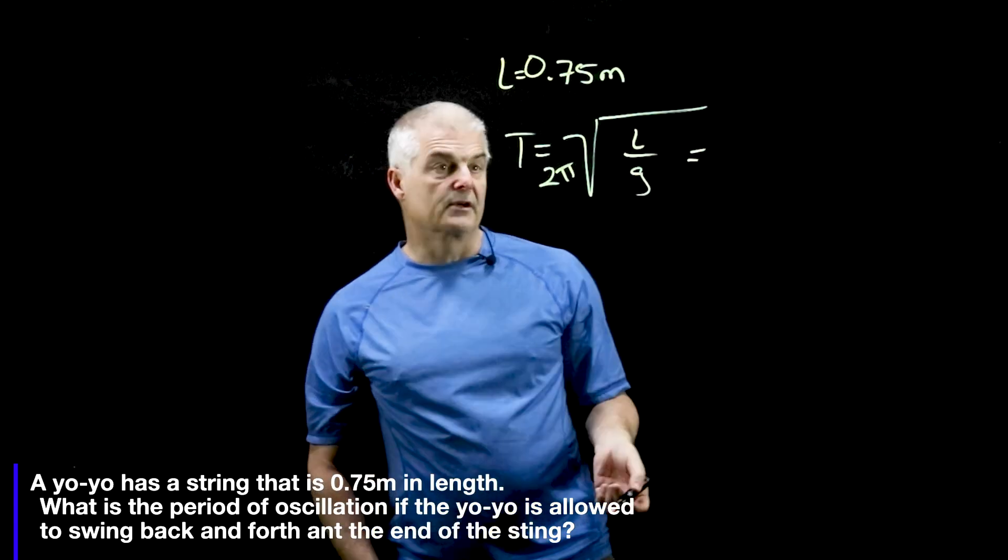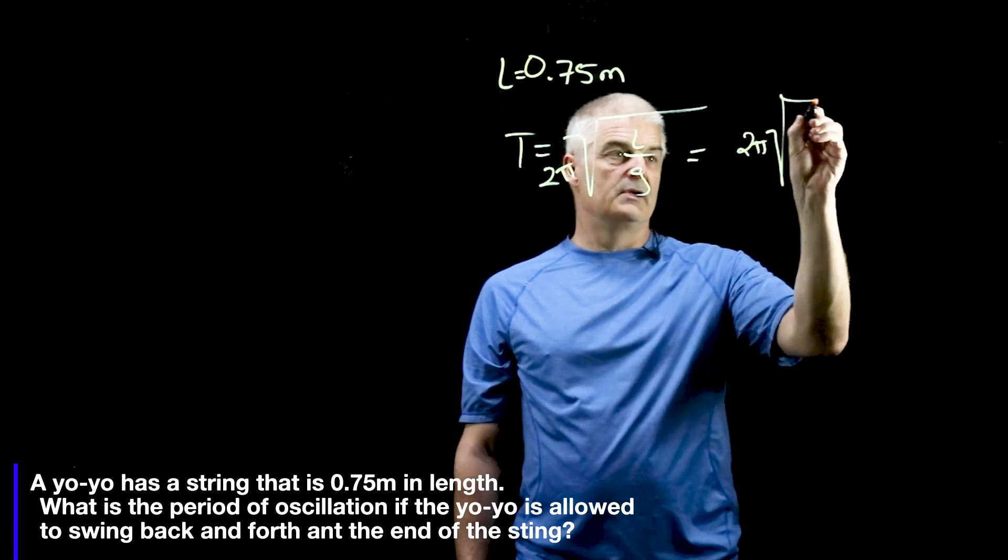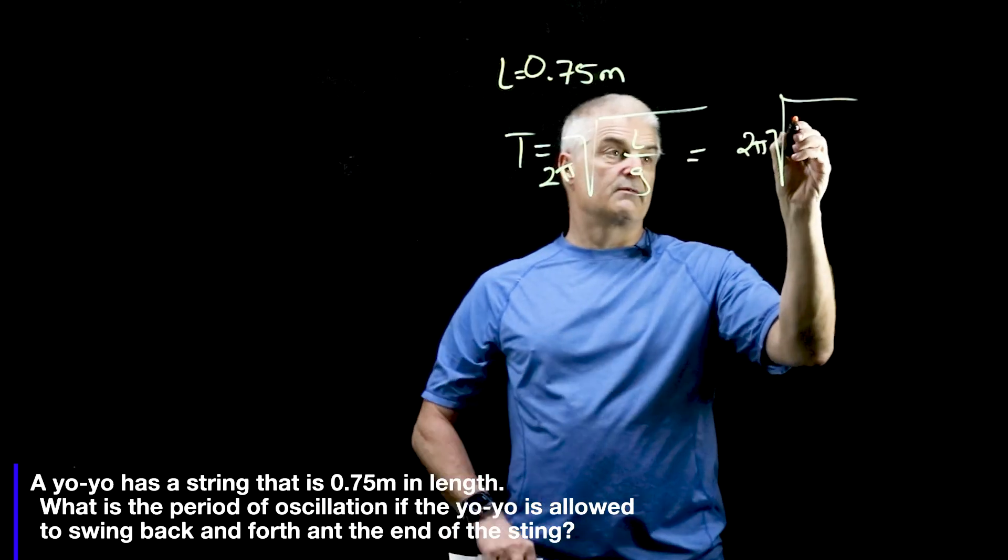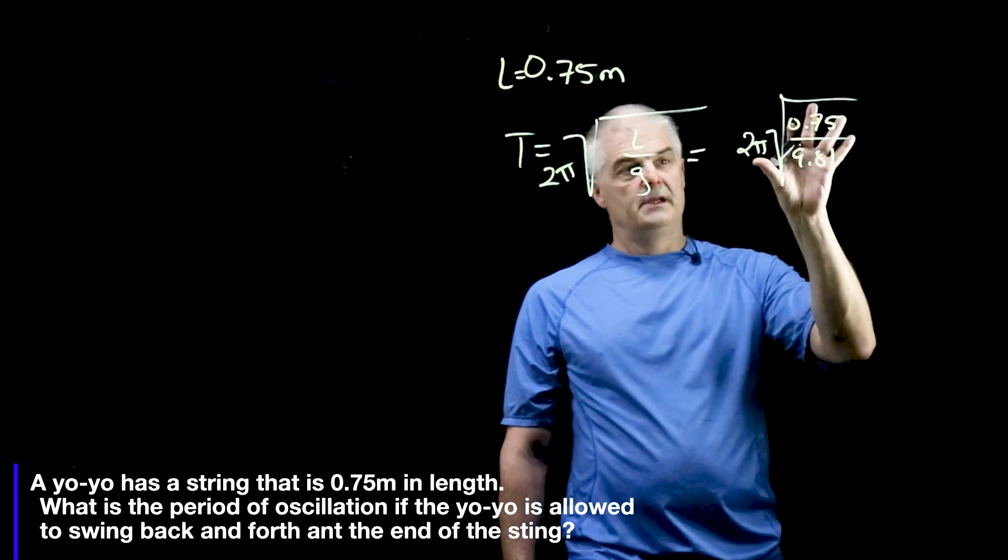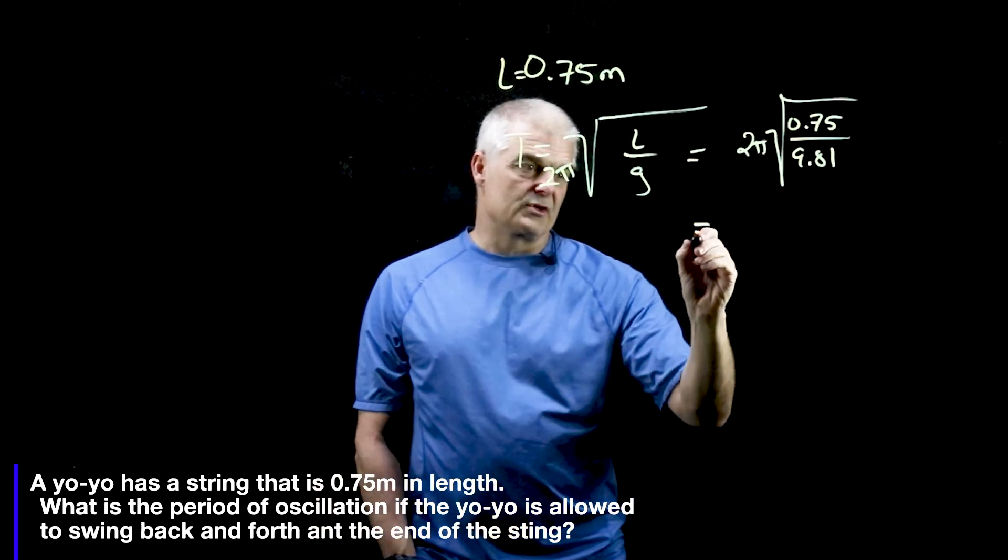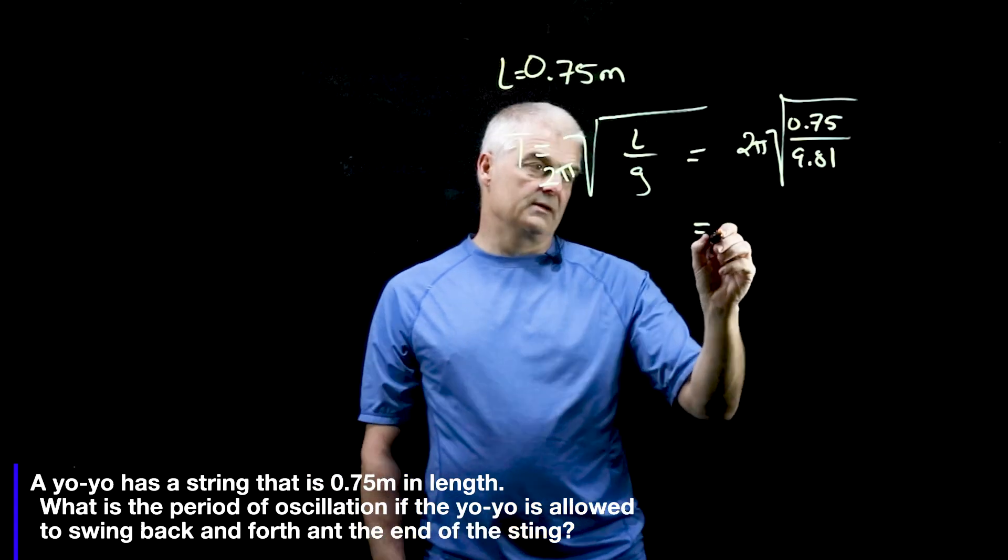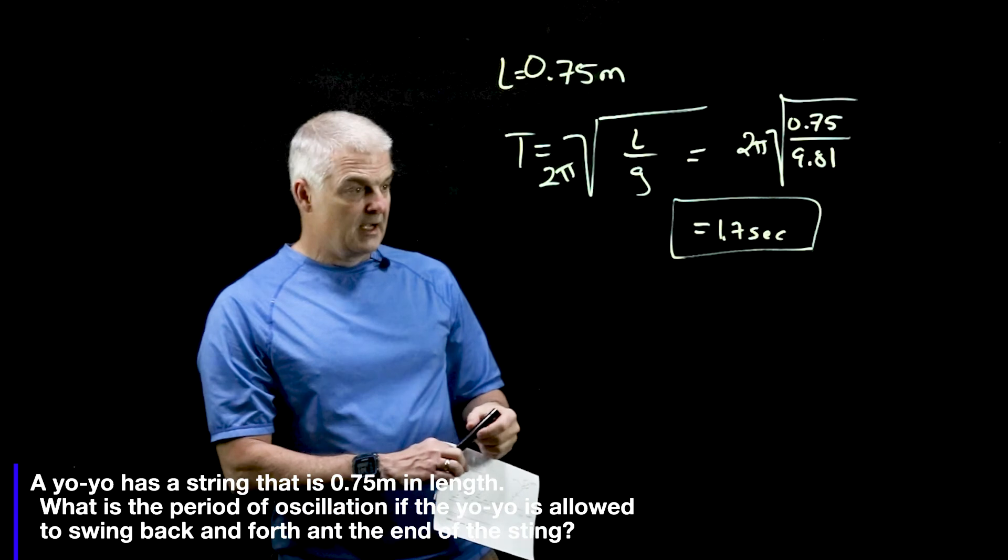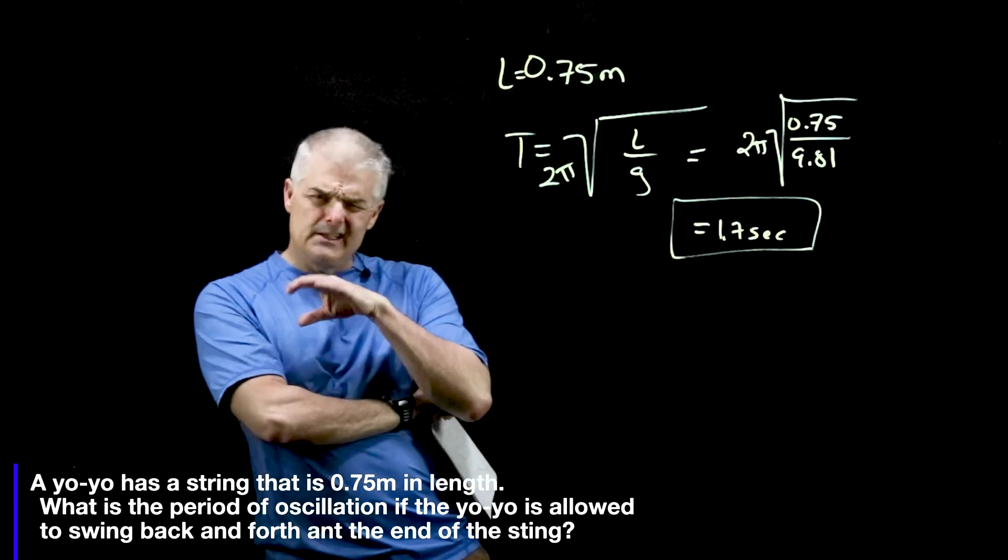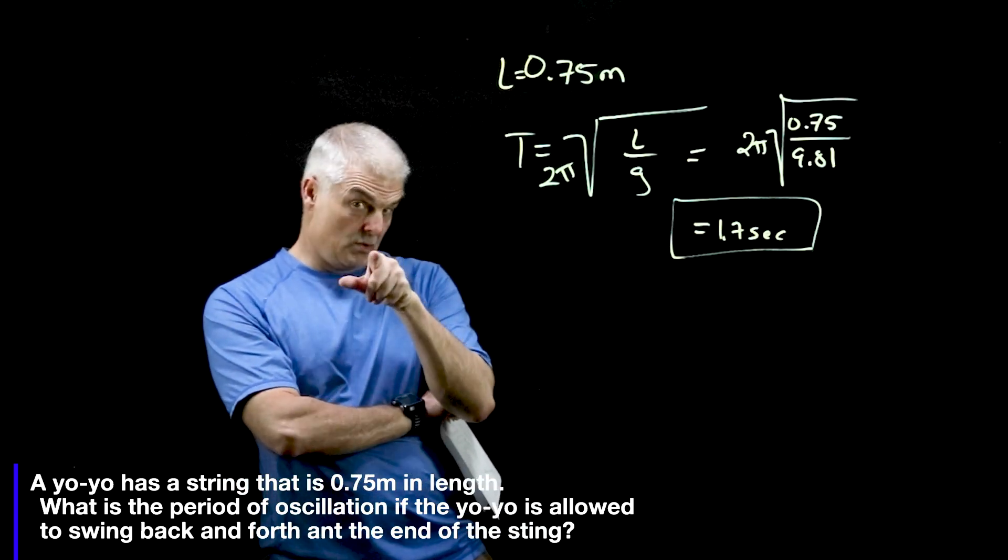Now, we're assuming that we're here on the earth, so that's equal to 2π square root of L, which is 0.75, divided by 9.81. You get a calculator out. I'm going to trust that you know how to do that on a calculator, and you get 1.7 seconds. This is easy, guys, just plugging it in. So that's how long it happens. But this actually leads us to some very interesting questions.